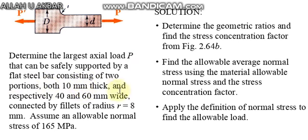The portions are respectively 40 and 60 mm wide. These are the diameters: small d equals 40 mm, big D equals 60 mm, connected by fillets of radius r equals 8 mm. Assume an allowable normal stress of 165 megapascals.